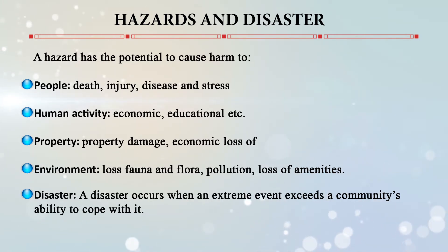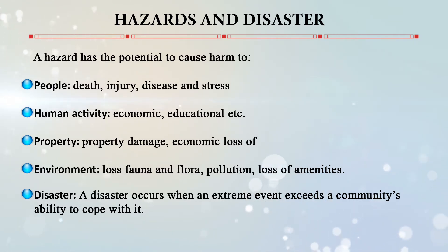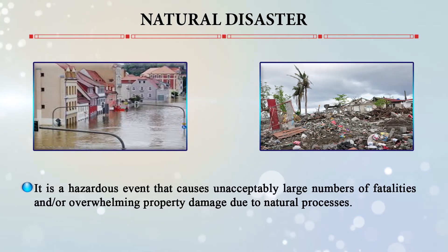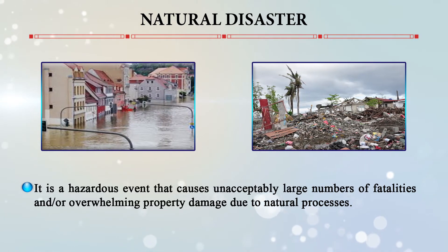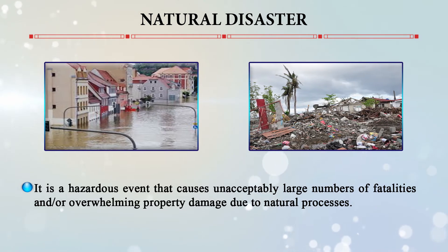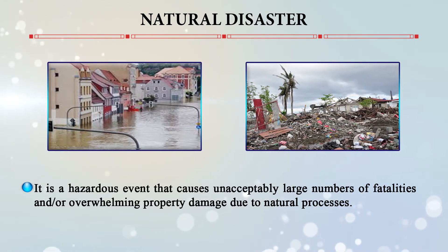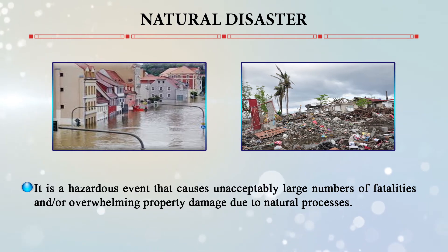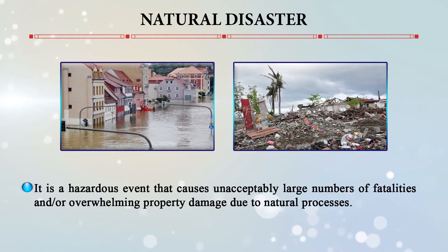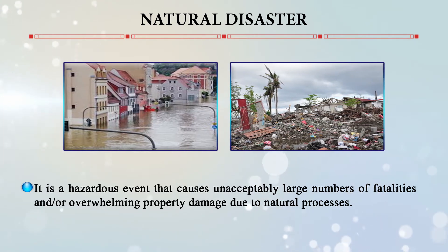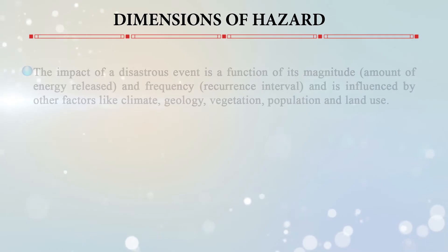A disaster occurs when an extreme event exceeds a community's ability to cope with it. A natural disaster is a hazardous event — as seen in the photographs shown here — that causes unacceptably large numbers of fatalities and/or overwhelming property damage due to natural processes. For example, flood and rains can be a hazard with primary, secondary, and tertiary effects.